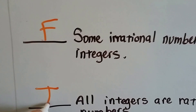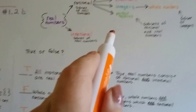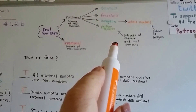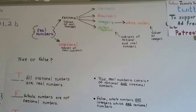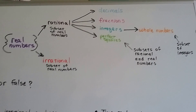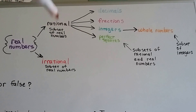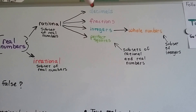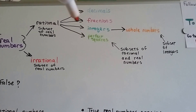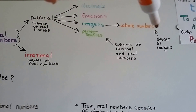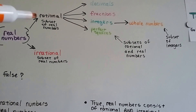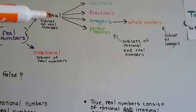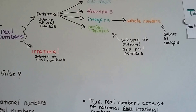By understanding the subsets of this tree, you'll be able to classify and group these different types of numbers into the set they belong in. Real numbers are broken into two subsets: rational and irrational. Rational numbers are broken up into four subsets — decimals, fractions, integers, and perfect squares — and integers have a subset of whole numbers. Irrational numbers are pretty much by themselves; real numbers break off into either rational or irrational, and the rational branch is the one that has everything else.